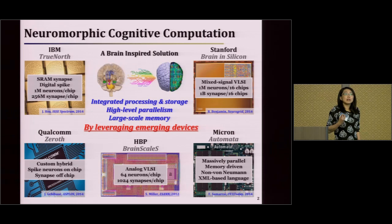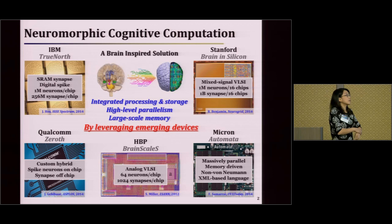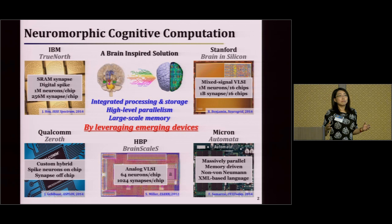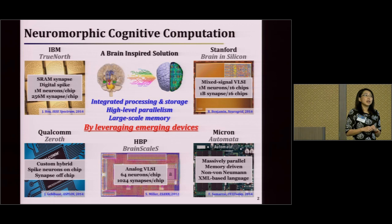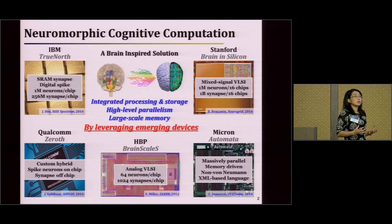We are able to integrate the processing and the storage all together to realize high-level parallelism operation and large-scale storage. However, all these approaches are implemented by CMOS technologies. In fact, the scale of the number of neurons and the number of synapses on chips are limited because of CMOS technology. Our research is trying to ask: can we leverage emerging technologies to further boost the on-chip capability?